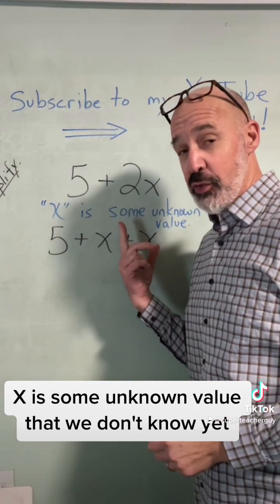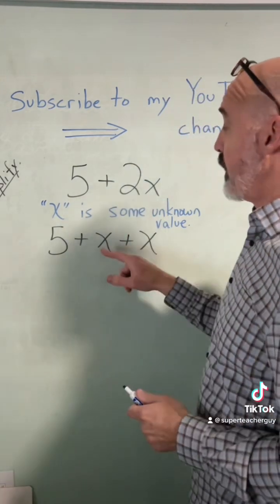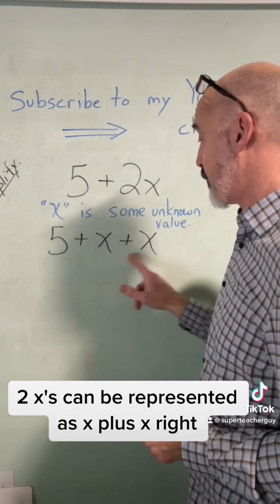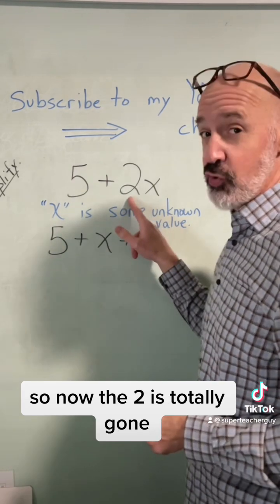X is some unknown value that we don't know yet. But two X's can be represented as X plus X, right? So now the two is totally gone.